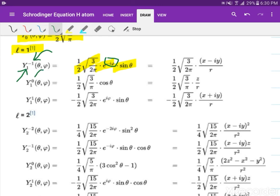For M equals 0, our exponential becomes 1, so we don't have an e term. For L equals 1, our associated Legendre polynomial is cosine of theta.